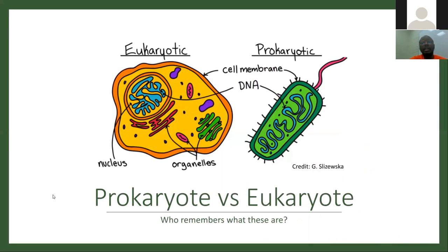We start at the very beginning. What is a cell? A cell is the smallest unit of life. It is the foundational block on which all other biological premises are built upon. We have two types of cells: a eukaryotic cell and a prokaryotic cell.